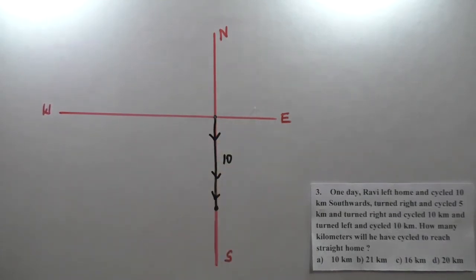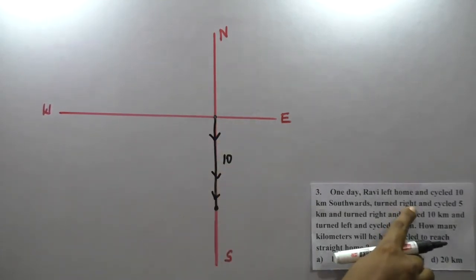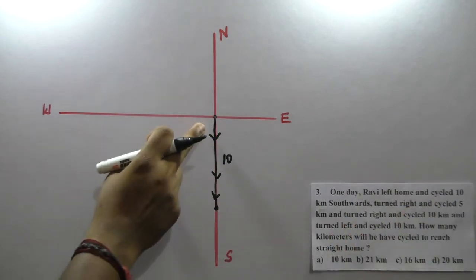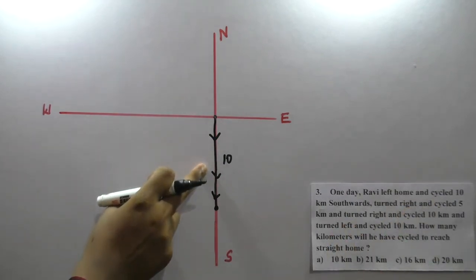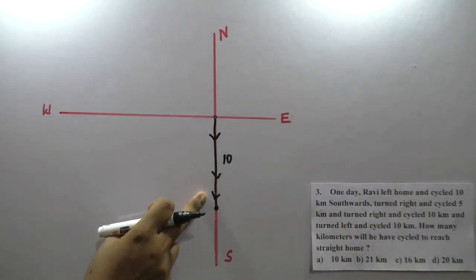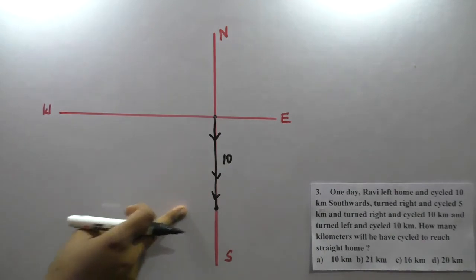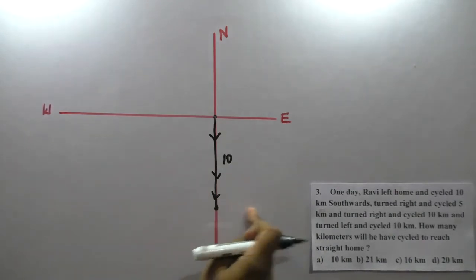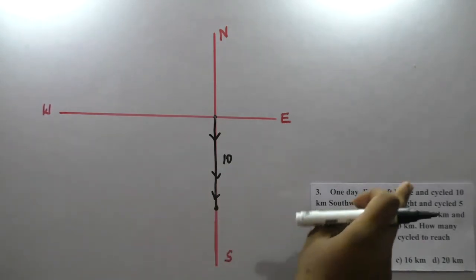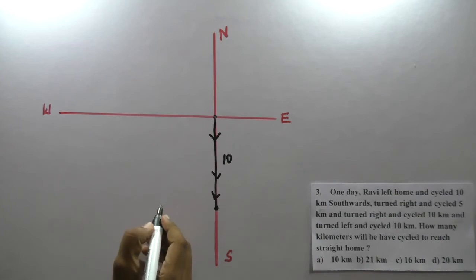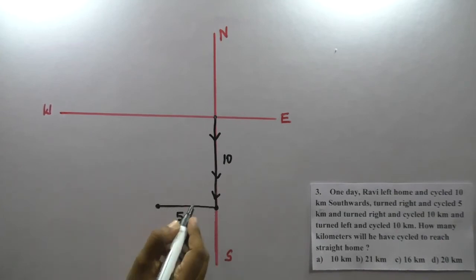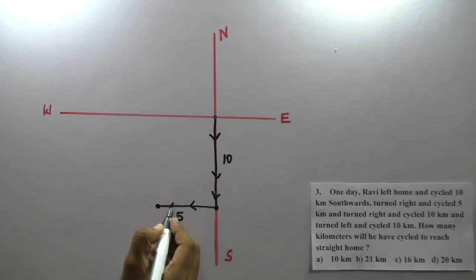Then he turns right. If Ravi turns right, the right-hand side is this side and left-hand side is this side. He is moving 5 kilometers to the right, so this will be 5 kilometers.